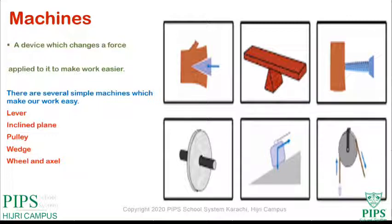There are several simple machines which make our work easier. For example: lever, inclined plane, pulley, wedge, and wheel and axle. These are the simple machines we use in our daily life which enable us to do work more easily.